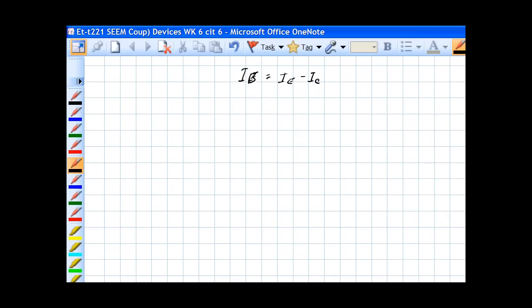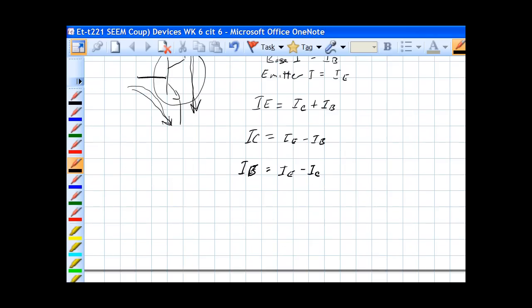Now we have something called beta DC. Beta DC is the relationship of IC over IB. When you're thinking about this, think about it this way: the current IB controls IC.